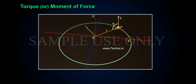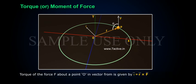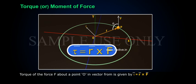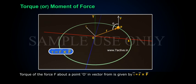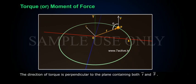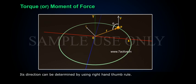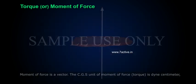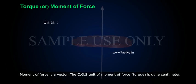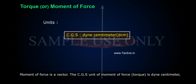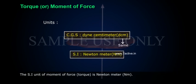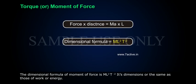Here R is the magnitude of the position vector, F is the magnitude of the force, and theta is the angle between R and F. The torque of force F about point O in vector form is given by: tau equals R cross F. The direction of torque is perpendicular to the plane containing both R and F, and its direction can be determined by using the right-hand thumb rule. Moment of force is a vector. The CGS unit of moment of force is dyne centimeter.